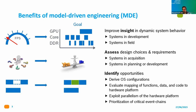From this approach we can identify early opportunities during system development: we can derive configurations for the operating system like scheduling parameters, decide where to deploy software components on the platform, where to deploy data and map it in memory, how to exploit the parallelism of new hardware platforms, and how to adhere to different requirements such as event chains in the system.